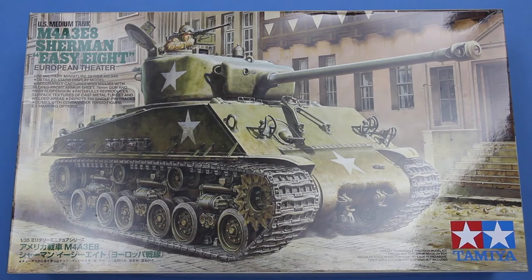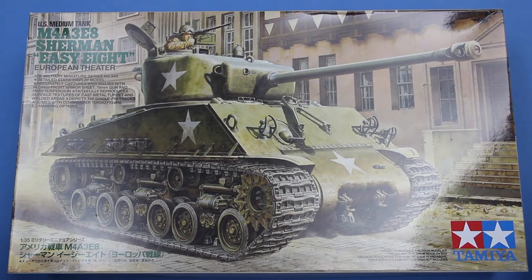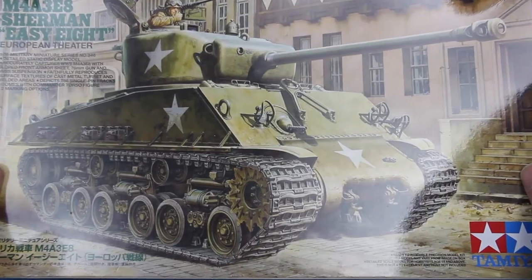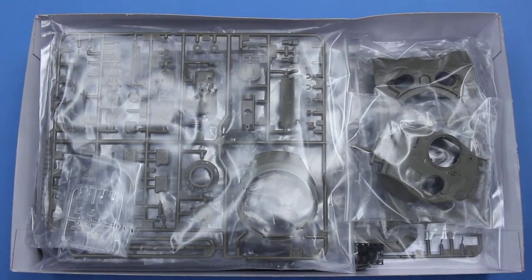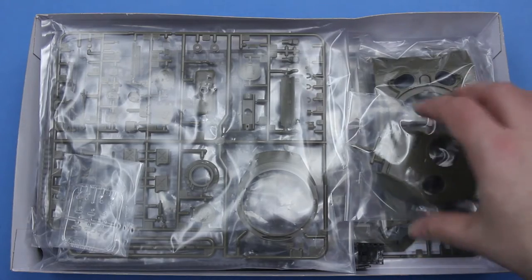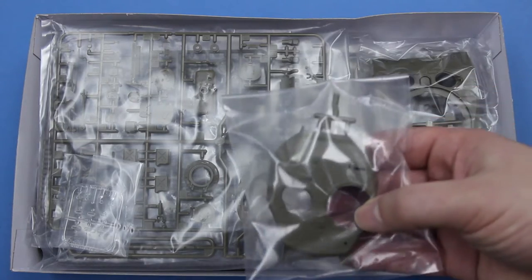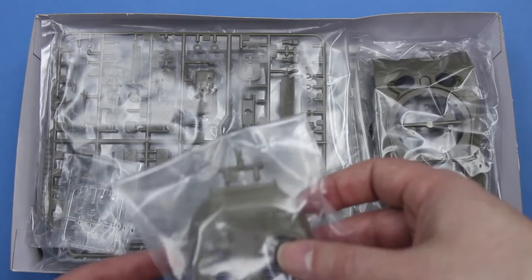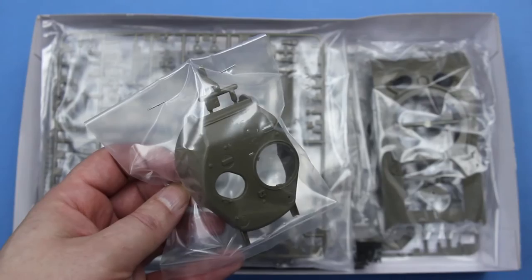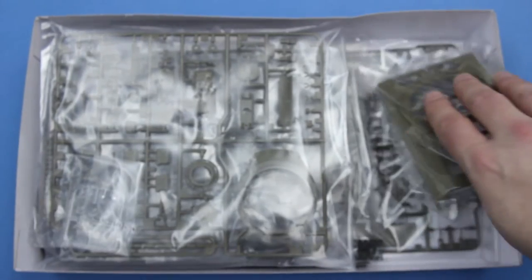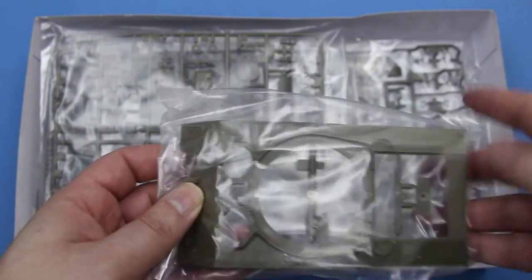So, let's take a look in the box. Quite a few sprues all neatly bagged. Yes, these are stapled. I'm sorry if you don't like that, but I can't quite see why you wouldn't. So, we have the upper shell for the turret here and the upper hull.